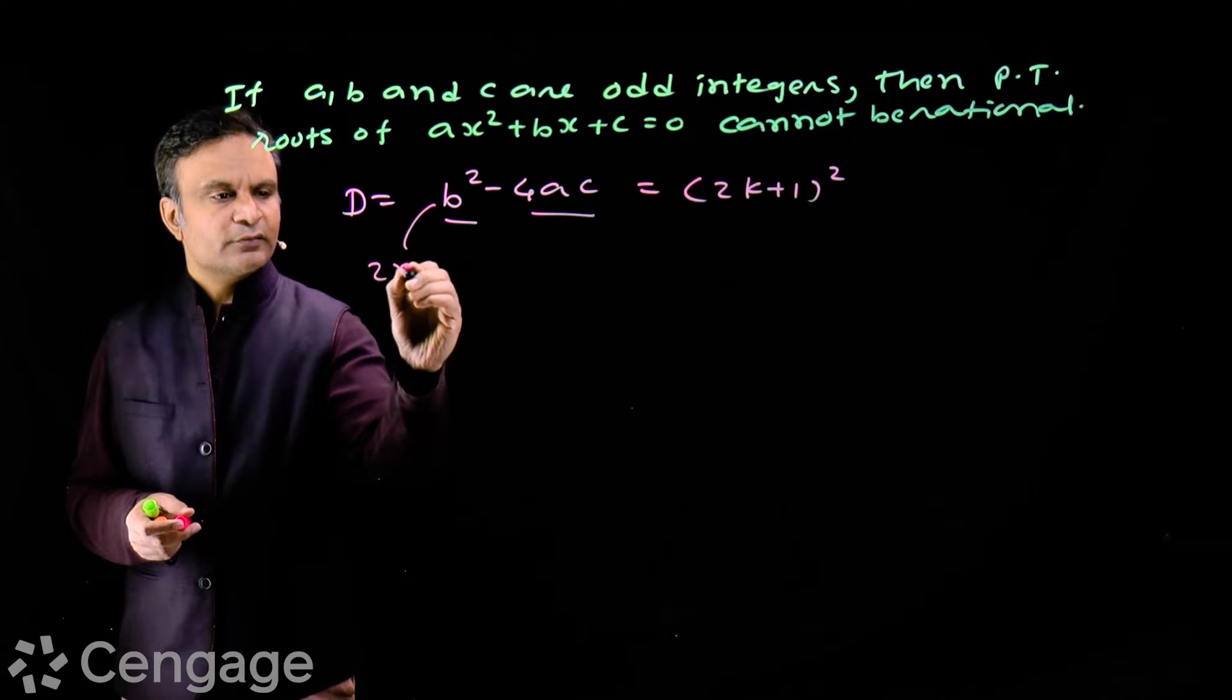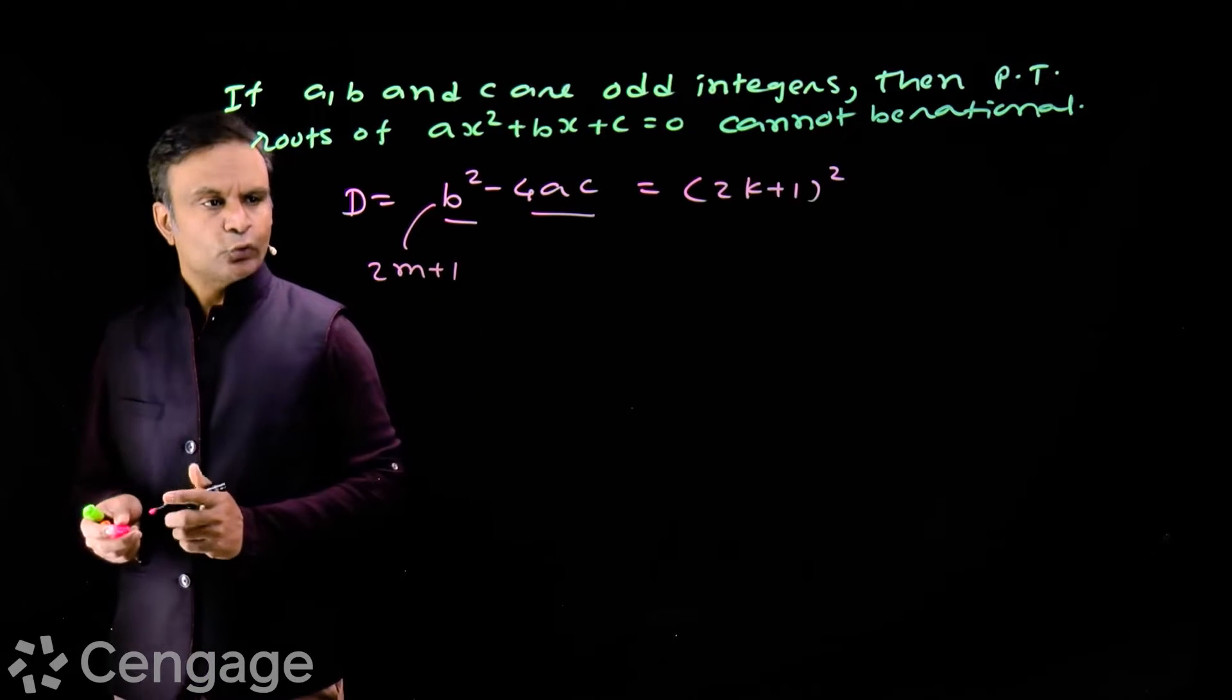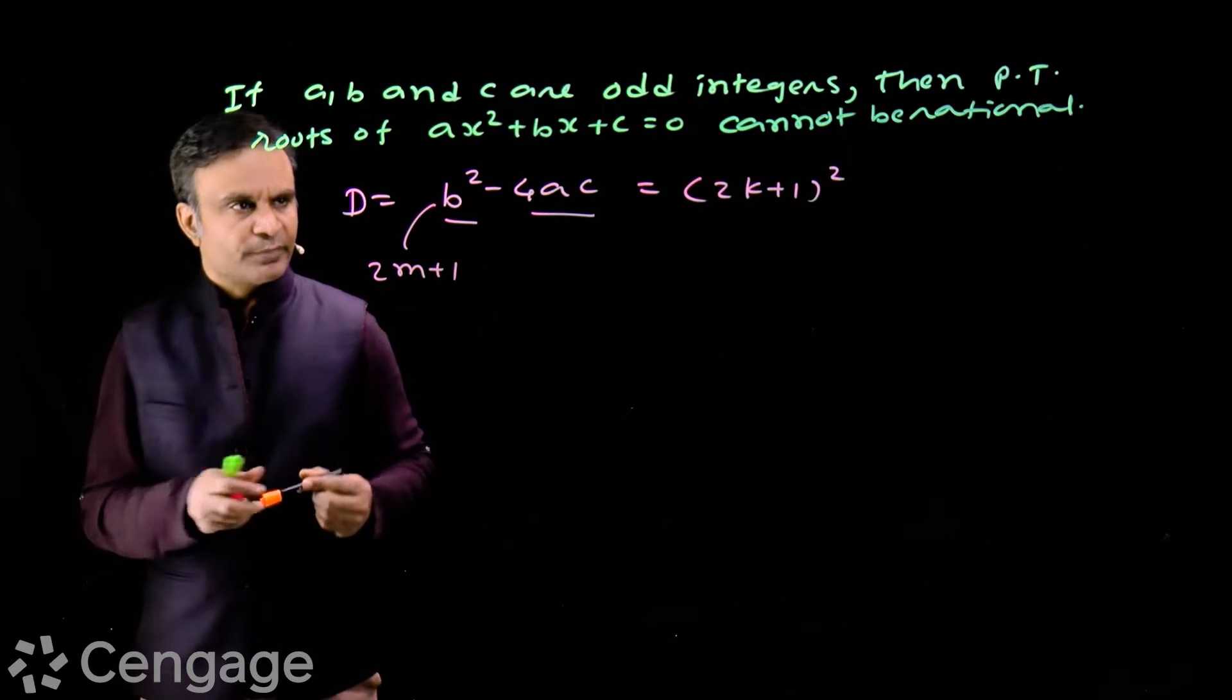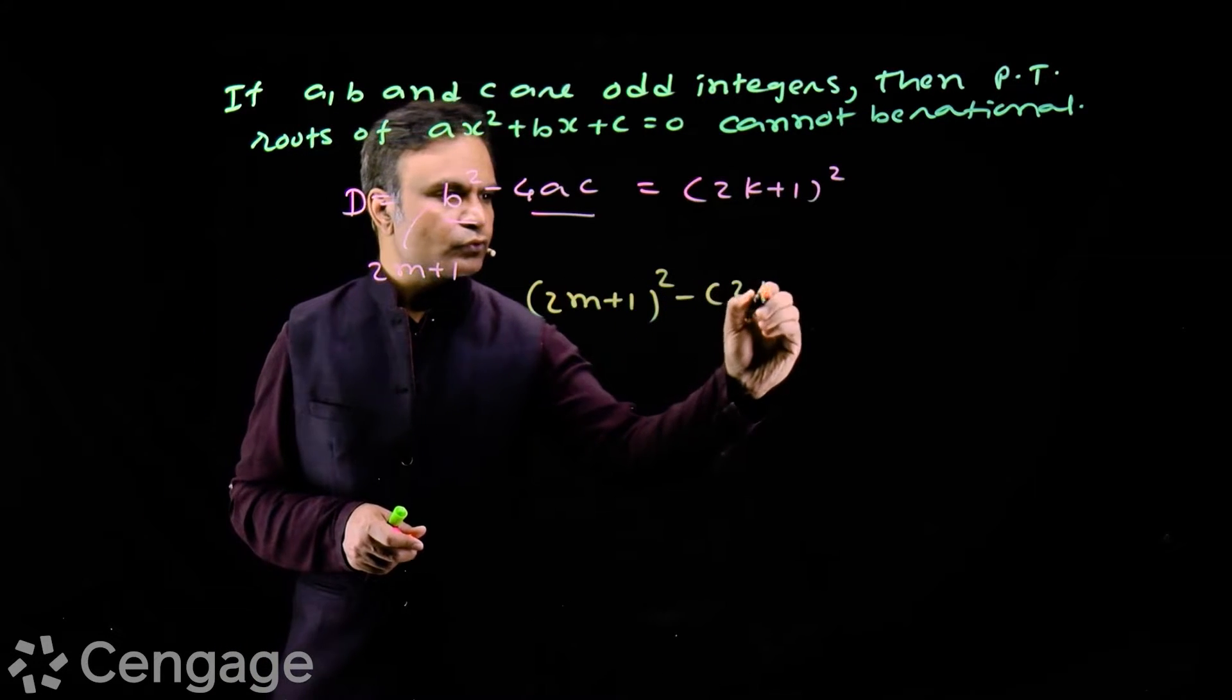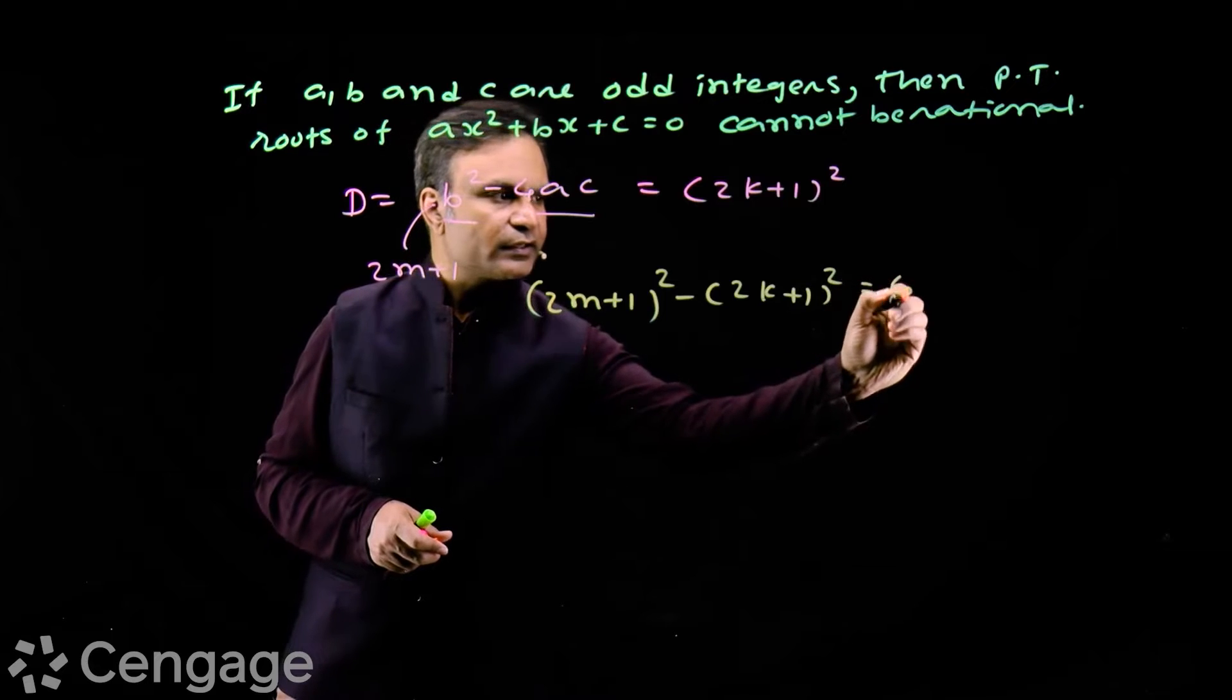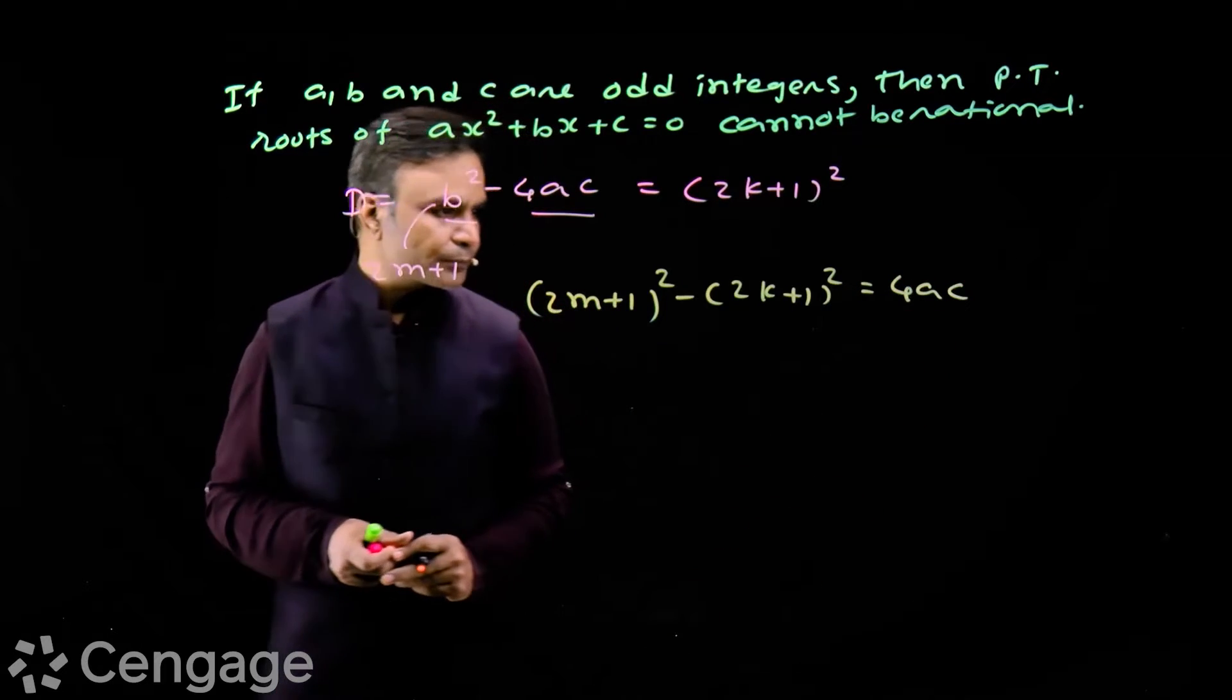So we assume that b is equal to 2m+1. So we have basically now (2m+1)² minus (2k+1)² is equal to 4ac. I am taking this term on LHS and minus 4ac on RHS.